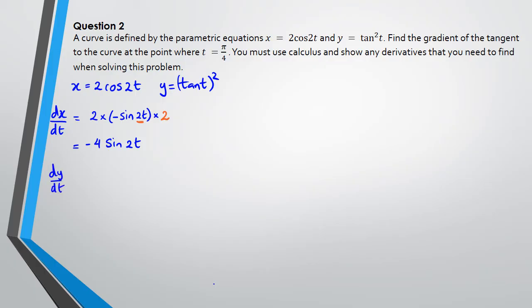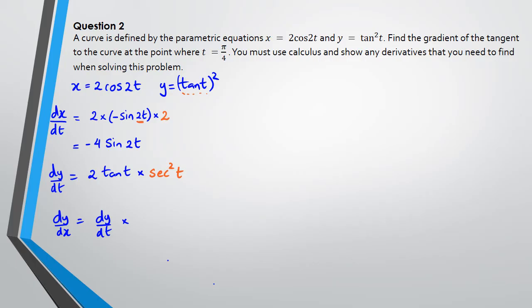For dy/dt I need to use the chain rule. Differentiating tan²(t) gives 2tan(t) multiplied by the derivative of tan(t), which is sec²(t). So dy/dt = 2tan(t) × sec²(t). Now that we have dy/dt and dx/dt, we can write dy/dx = dy/dt × dt/dx, which gives us 2tan(t) × sec²(t) × 1/(-4sin(2t)).